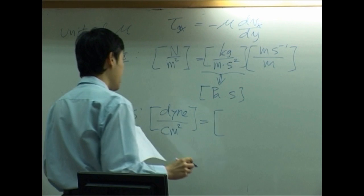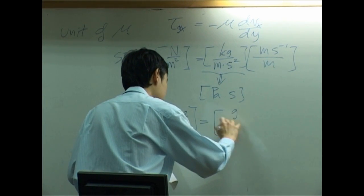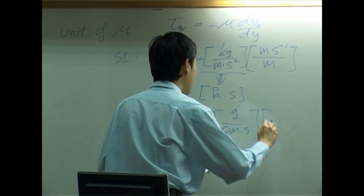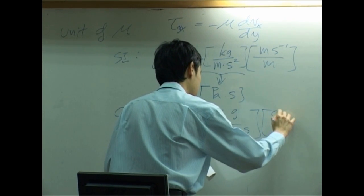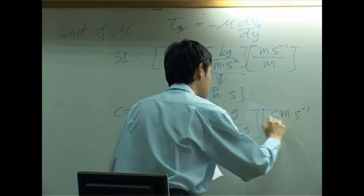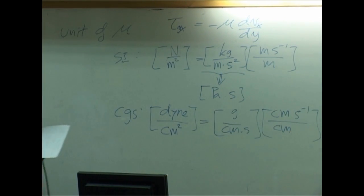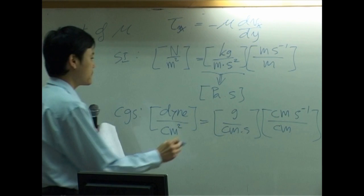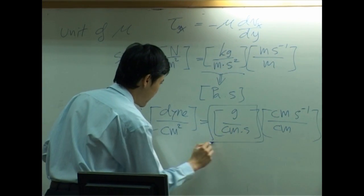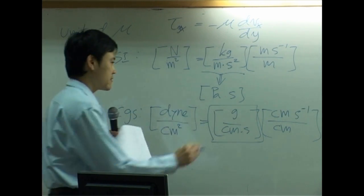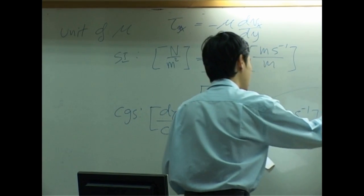The unit of viscosity would be gram per centimeter second. And then velocity is centimeter per second. And y would have centimeter. So the unit of viscosity in CGS is called gram per centimeter second. This sometimes called poise.